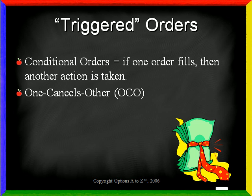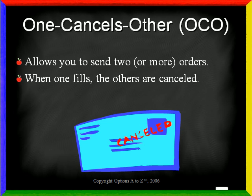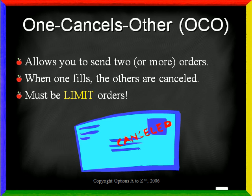The first is called One Cancels Other, also called an OCO order, and the second is called a Sequence order. An OCO order allows you to send two or more orders at the same time. When one order fills, the other or others are cancelled. It's important to understand that each order must be a limit order, and the reason is that market orders are guaranteed to fill, so you can't use market orders with the OCO condition.